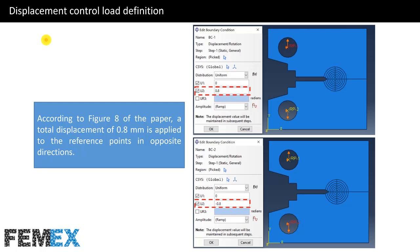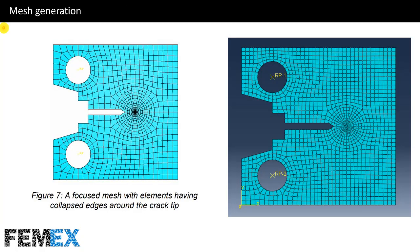Now I want to talk about displacement control load definition. According to figure 8 of the paper, a total displacement of 0.8 mm is applied to the reference points in opposite directions. For the first reference point, I have set U2 to 0.8 and for the second reference point, I have set it to minus 0.8, because we are modeling the opening fracture mode or mode 1 and the specimen will be opened. This is the mesh illustrated in the paper and this is the mesh which I have generated. As you can see, they are similar to each other and both have a spiderweb mesh pattern.